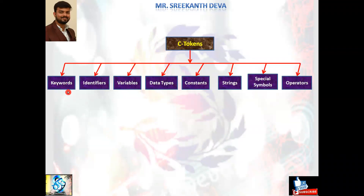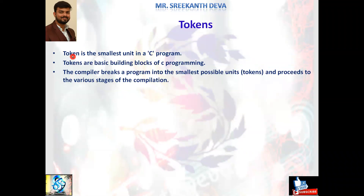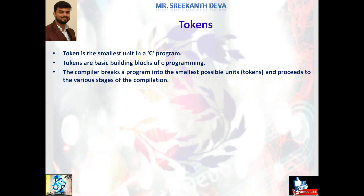In this session we'll discuss in detail about what is a C token and also what are the various keywords supported by C programming language. A token is the smallest unit in a C program. Tokens are the basic building blocks of C programming. The compiler breaks a program into the smallest possible units — tokens — and proceeds to the various stages of compilation.